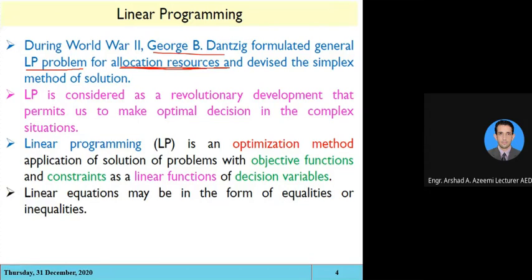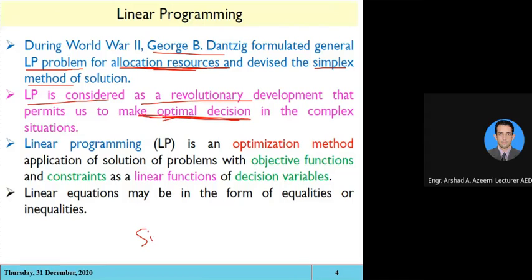Linear programming has two methods: the graphical method and the simplex method. Linear programming is considered a revolutionary development that permits us to make optimal decisions. We generally use two terms: one is called simulation and the second one is called optimization.